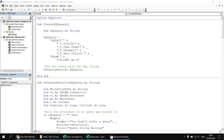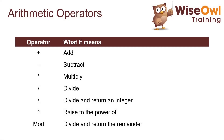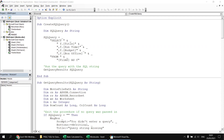Let's begin calculations with simple arithmetic. We have a standard range of arithmetic operators: add, subtract, multiply, divide (in two different ways depending on whether we want a decimal or integer result), raise to the power of, and the mod operator to return the remainder of a division. Let's start by multiplying the Runtime field by 60 to get the runtime in seconds.